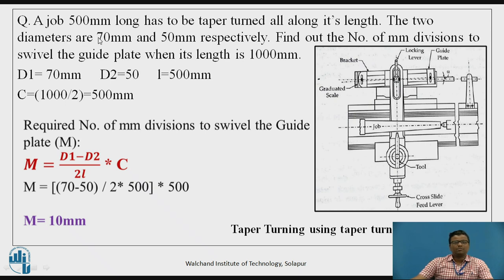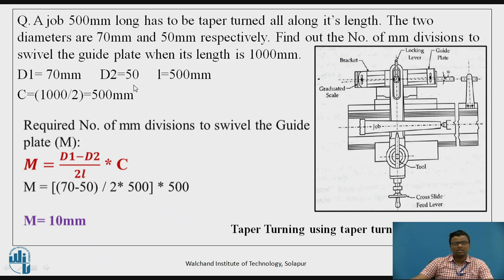Numerical example for taper turning attachment: A job 500 mm long has to be taper-turned along its full length. The diameters are 70 mm and 50 mm respectively. Calculate the number of mm divisions to swivel the guiding plate when the guiding plate length is 1000 mm. Given d1 = 70 mm, d2 = 50 mm, L = 500 mm, c = 1000/2 = 500 mm. Substituting in m = (d1 − d2) / 2L × c gives m = 10 mm.